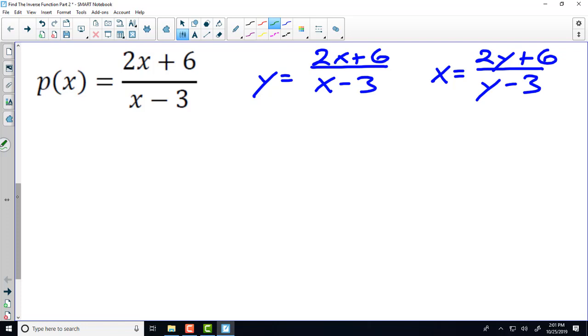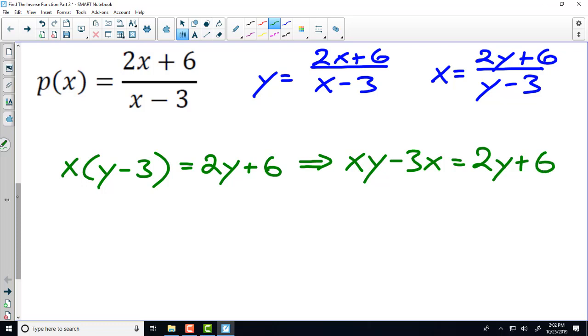We want to eliminate the fraction, so I'm going to multiply both sides by y minus 3. If I multiply both sides by y minus 3, the left-hand side picks up a y minus 3, and the right-hand side loses its y minus 3 in the denominator. Then, distribute on the left-hand side, giving you xy minus 3x equals 2y plus 6.